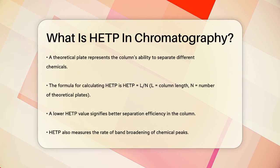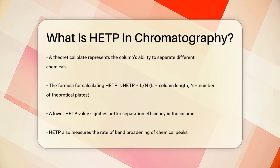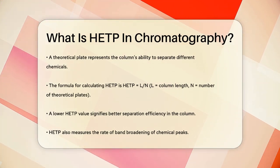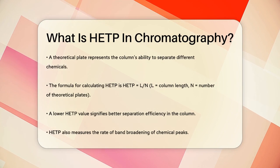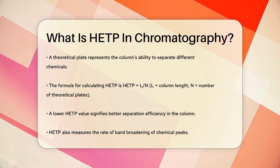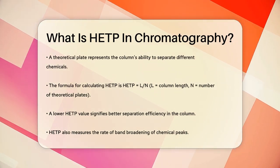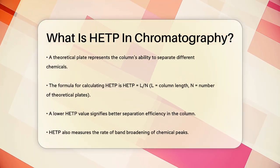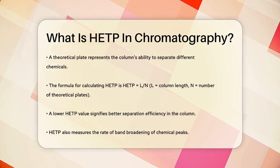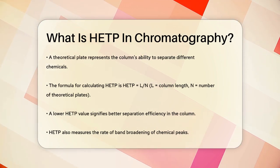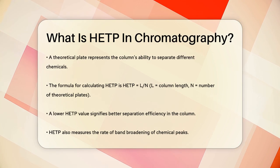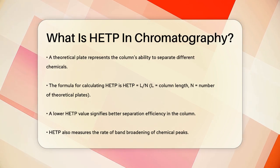To calculate HETP, you use the formula HETP equals L over N, where L is the length of the column and N is the number of theoretical plates. The lower the HETP value, the better the column is at separating chemicals, because it means each unit of length is more efficient at achieving that separation.